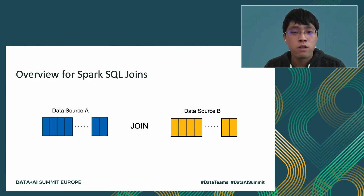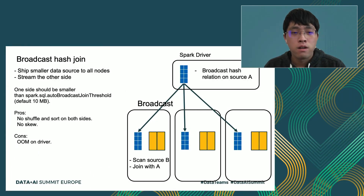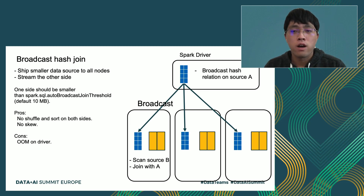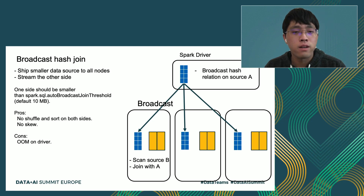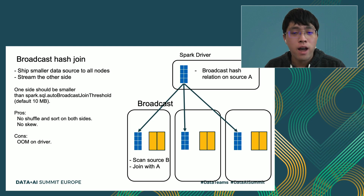As an example, we want to join two data sources A and B. Broadcast hash join is used to join a very small table with another table. Suppose data source A is pretty small — the Spark driver will build the hash relation on top of source A and broadcast A to every task. Each task will read a portion of table B and do hash table lookup join with table A. The requirement is that the data size of one table should be smaller than the config spark.sql.autoBroadcastJoinThreshold, which is 10 megabytes by default. The pros are there's no shuffle and sort needed on both sides, and it doesn't have any skew issues. The cons is that if source A is not small enough, it can cause OOM on the driver side when building the hash relation.